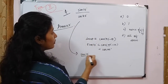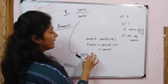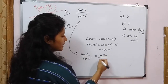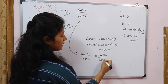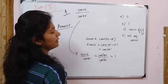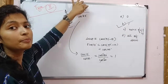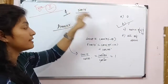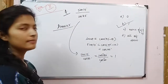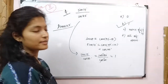So sin 10° upon cos 80° equals cos 80° upon cos 80°, which equals 1. It is a very simple type of question. Let's see some other questions.